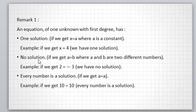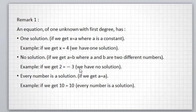No solution: there is no solution if we get a equal b, where a and b are two different numbers. Example: if we get 2 equal to minus 3, we have no solution.